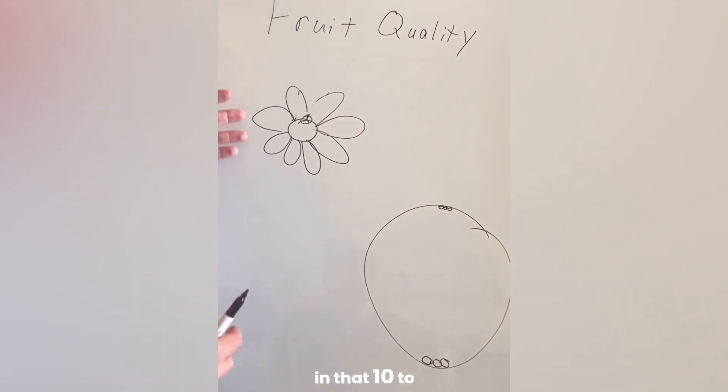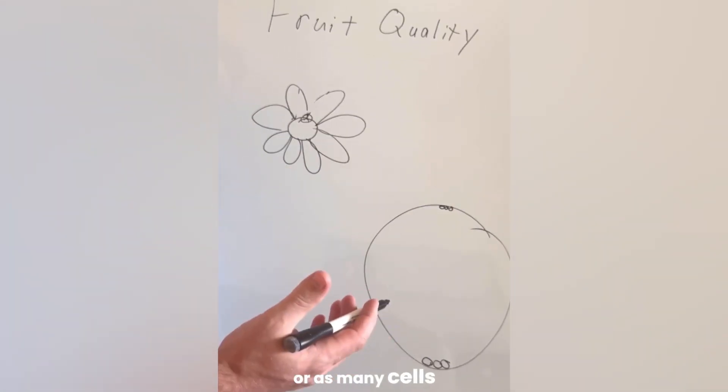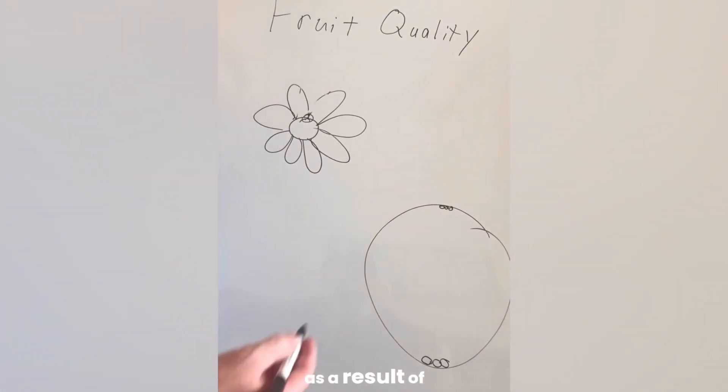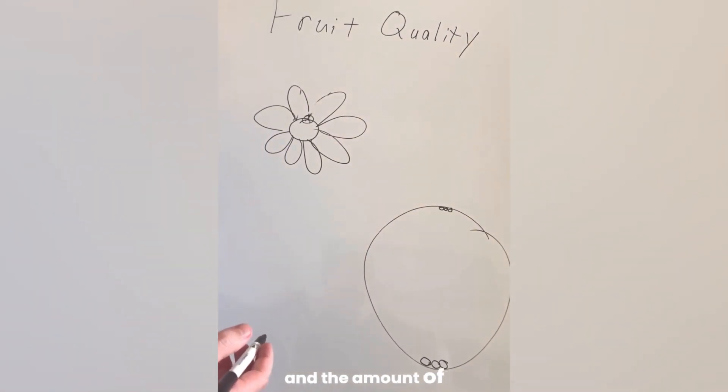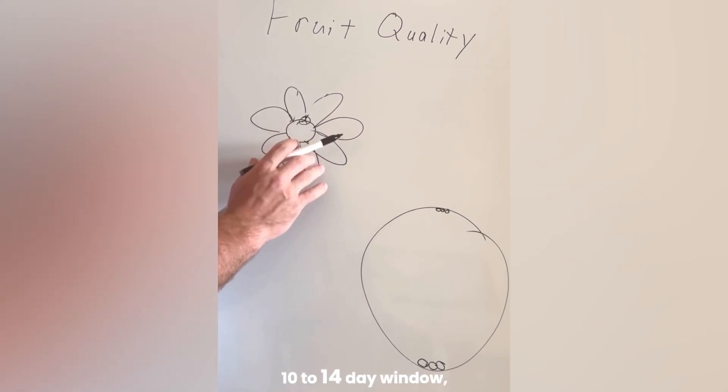So you want, in that 10 to 14 day window, to produce as many tiny cells as possible, or as many cells as possible. Cell size then becomes constrained as a result of the number of cells and the amount of nutrition that is available. So what happens in that 10 to 14 day window?